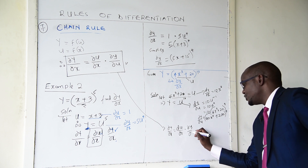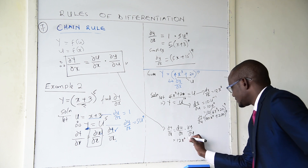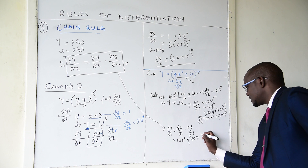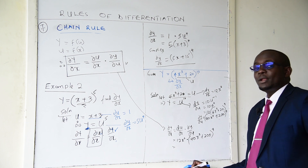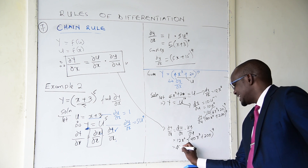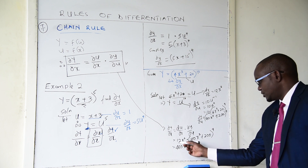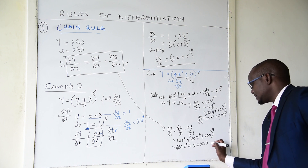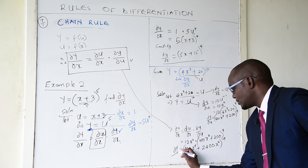Going back to our rule: dy/dx equals du/dx times dy/du. We know du/dx is 12x squared, and dy/du is (40x cubed plus 200) to the power 9. Multiplying: 12 times 40 gives 480, so x squared times x cubed gives x to the power 5, and 12 times 200 gives 2400x squared. Therefore dy/dx equals (480x to the power 5 plus 2400x squared) to the power 9.